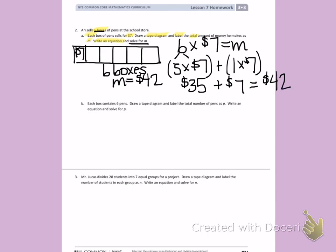Letter B. Each box contains 6 pens. Draw a tape diagram and label the total number of pens as P. Write an equation to solve and solve for P. I have to remember that I already found the total boxes: 6 boxes. Now they're telling me that each box contains 6 pens. I need to draw a tape diagram, label the total as P, and then write an equation and solve for P.